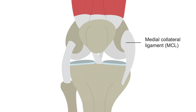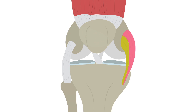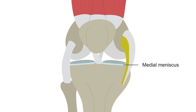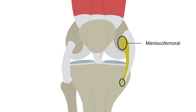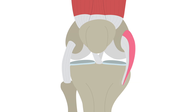The medial collateral ligament, or MCL, is the other common ligamentous injury in the lower extremity and is identified on the medial aspect of the knee between the femur and tibia. The MCL has two layers: the deeper layer and the superficial layer. The deeper layer blends with the medial meniscus and attaches on the adjacent femoral and tibial bony surfaces, known as the menisco-femoral portion and menisco-tibial portion. The superficial layer is longer and extends more proximally on the femur and more distally on the tibia.